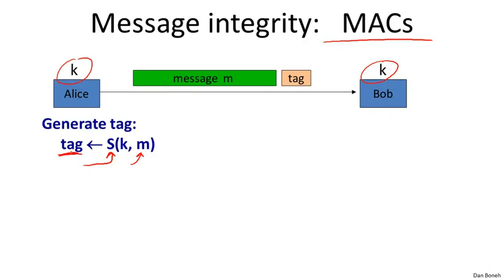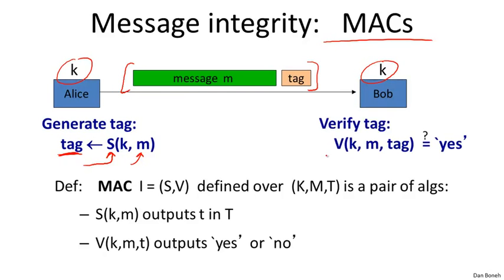Alice appends the tag to the message and sends the combination to Bob. Bob receives the message and the tag, and then runs the MAC verification algorithm on the tag. The verification algorithm takes as input the key, the message, and the tag, and outputs yes or no depending on whether the message is valid or has been tampered with.